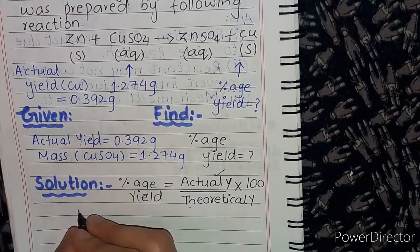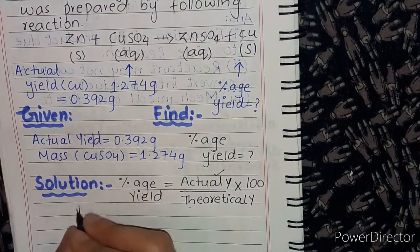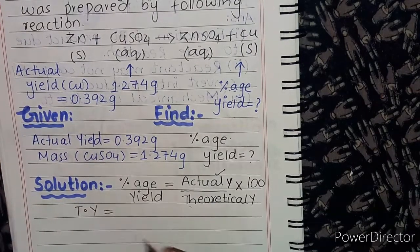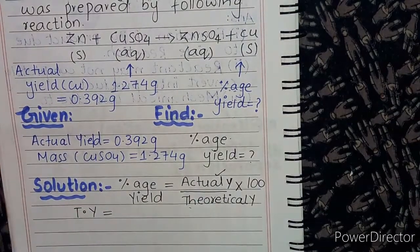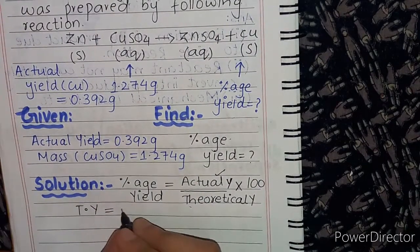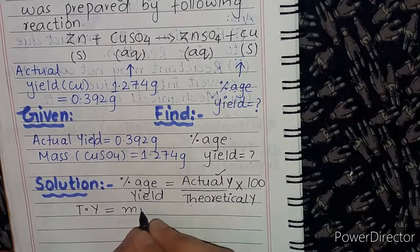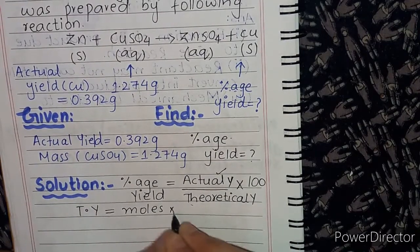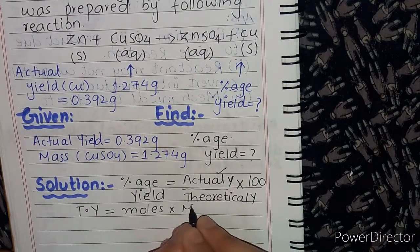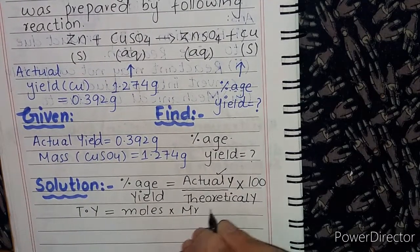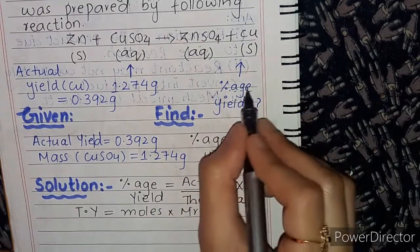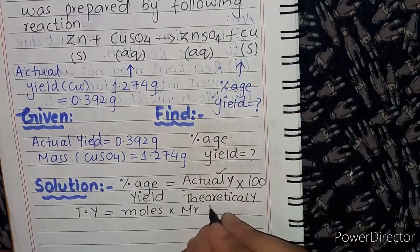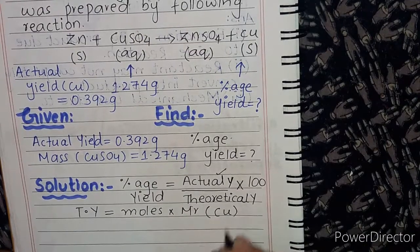What is the formula? We will use the formula of moles multiplied by molar mass to find the theoretical yield of copper. We will use the molar mass of Cu and the moles of Cu.